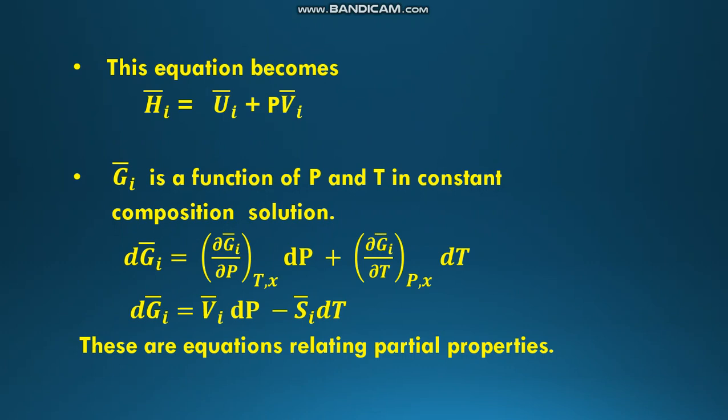This means that if we have a linear relation among total properties, we can relate the partial properties in the same way. Since G_i bar is a function of pressure and temperature in a constant composition solution, we can write: dZ_i bar = (∂Z_i bar/∂P) at constant T, x · dP + (∂Z_i bar/∂T) at constant P, x · dT, which gives dZ_i bar = V_i bar dP − S_i bar dT.